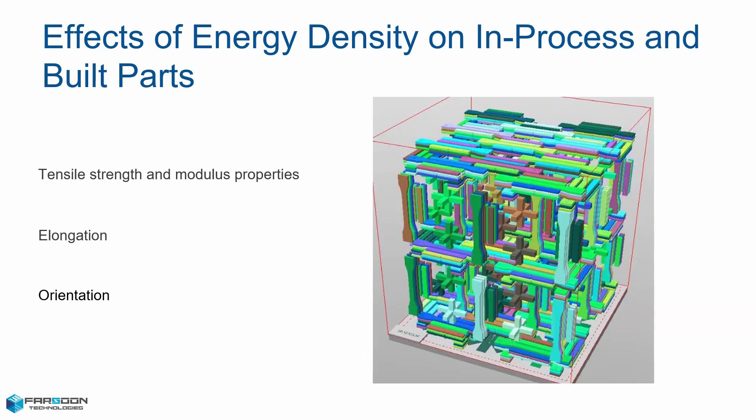Lastly, we have orientation. Due to anisotropy, vertically built parts relative to the build surface have relatively low tensile strength values with large variation, very low elongation at break, and lower tensile modulus values. Large thin parts should be built at an angle to reduce thermal stress and avoid warping. This orientation may produce layer or step lines on the part.